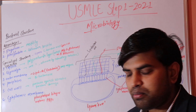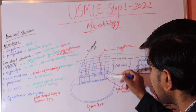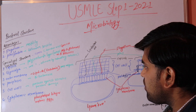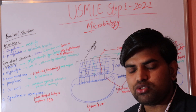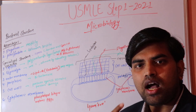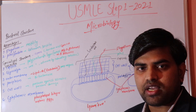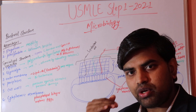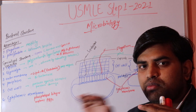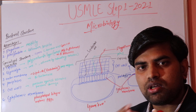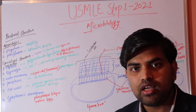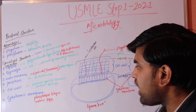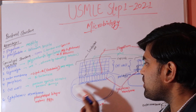The cell wall in gram positive bacteria is composed mainly of the peptidoglycan layer, while in gram negative it consists primarily of the outer membrane. The main function of the cell wall is to protect against osmotic damage. Since bacterial cells are hypertonic and body fluid is isotonic, water would otherwise rush into the cell, causing it to swell and burst. The rigid cell wall prevents this.